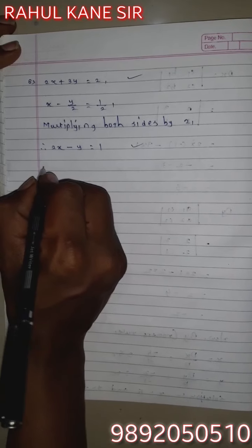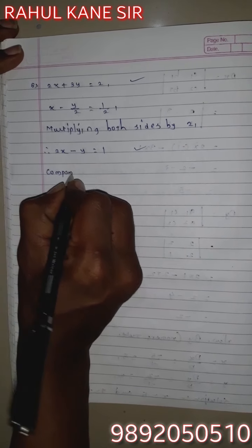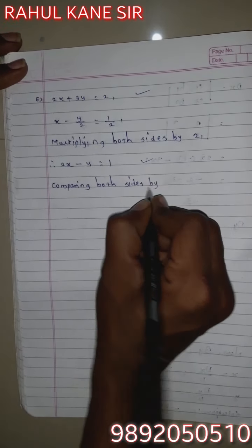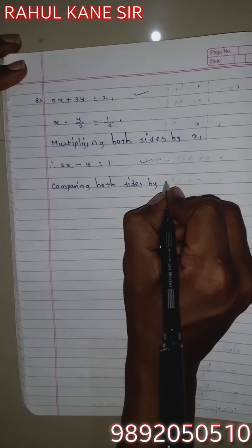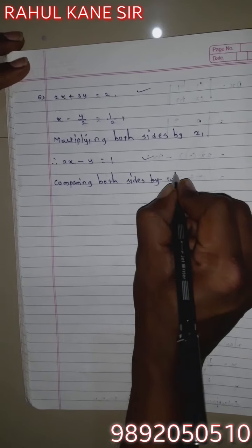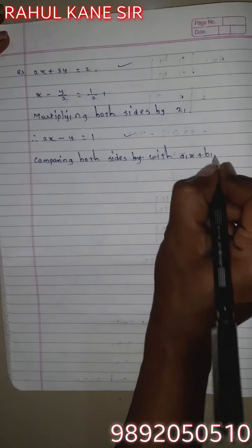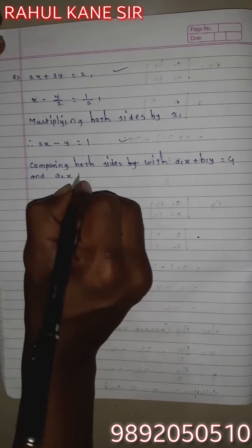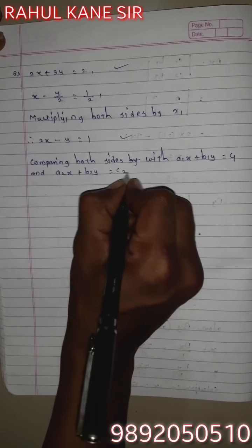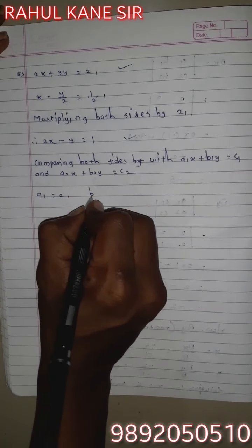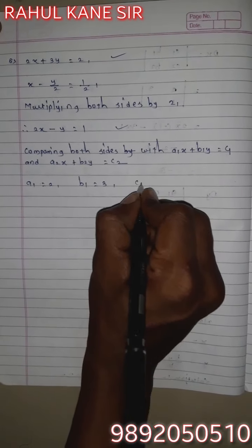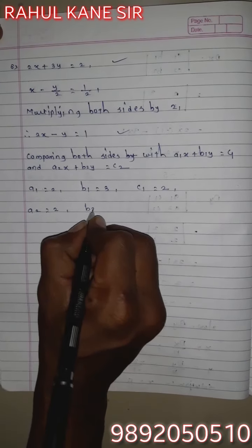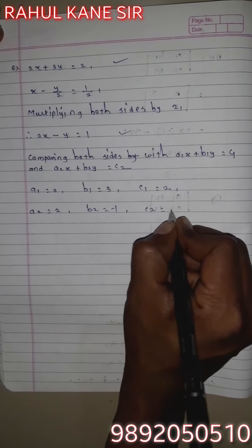These two are the correct equations that we have to compare. Comparing with a1x + b1y = c1 and a2x + b2y = c2: a1=2, b1=3, c1=2, a2=2, b2=-1, c2=1.